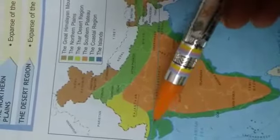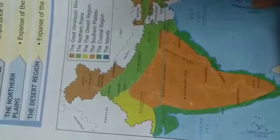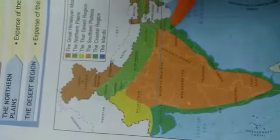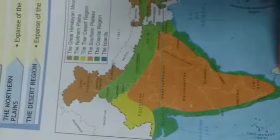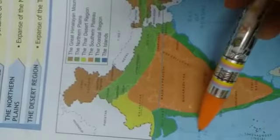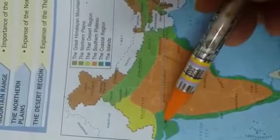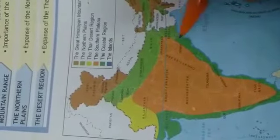Then the coastal plains. India has a long coastline of about 7500 km including the mainland and the islands. The entire coastline has coastal plains along with it. It starts from Gujarat to West Bengal.